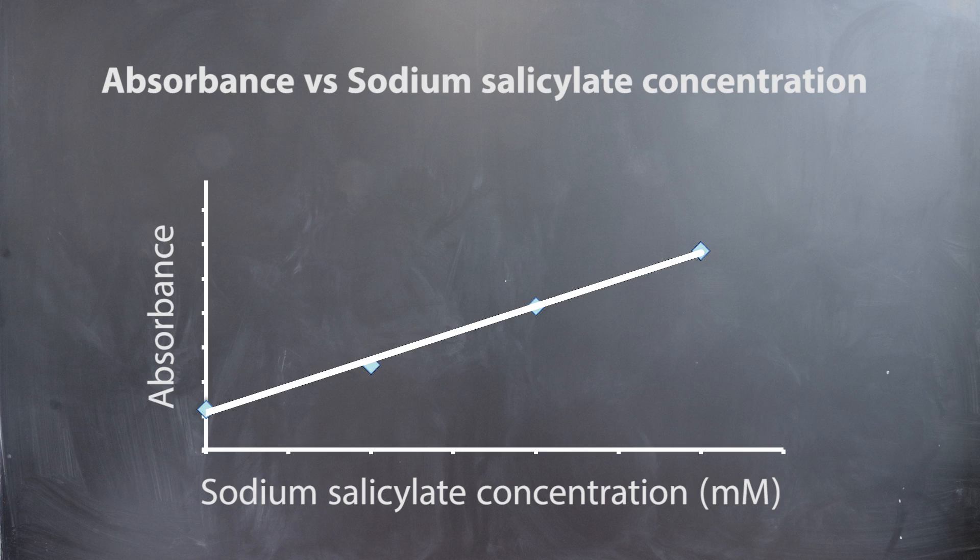To determine the concentration of the unknown tablet samples, you can use the formula for the standard curve plotted in part one of the experiment. Substitute Y with the absorbance of the unknown sample and solve for X, which will be the concentration of the sodium salicylate. You should also double check your answer visually with the graph.